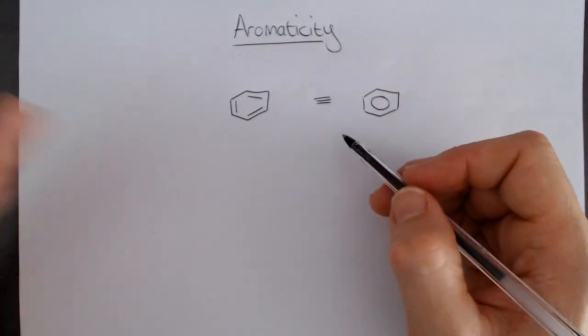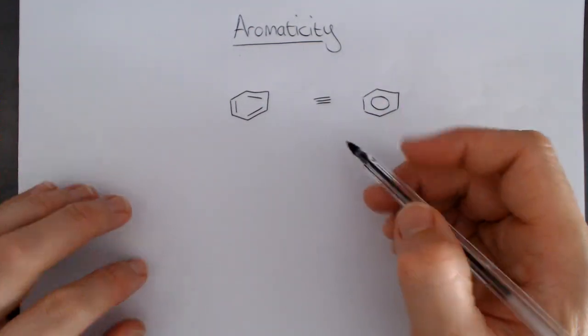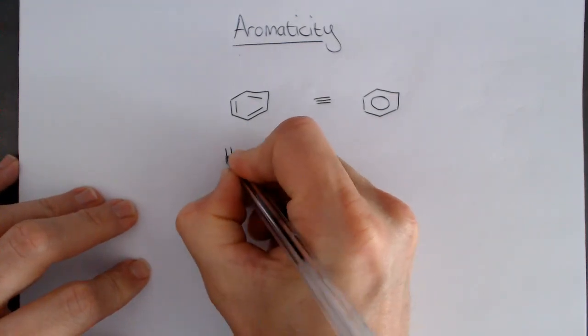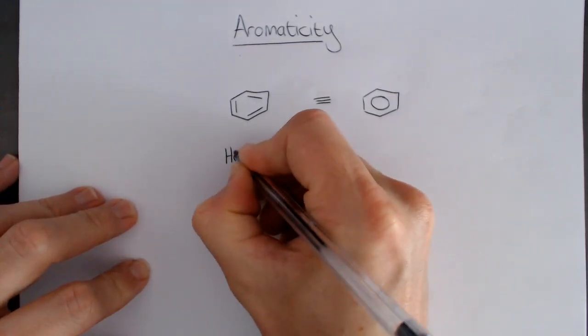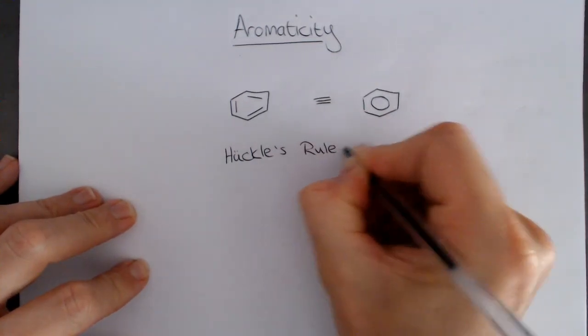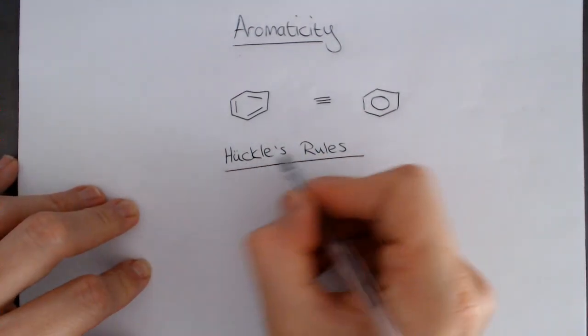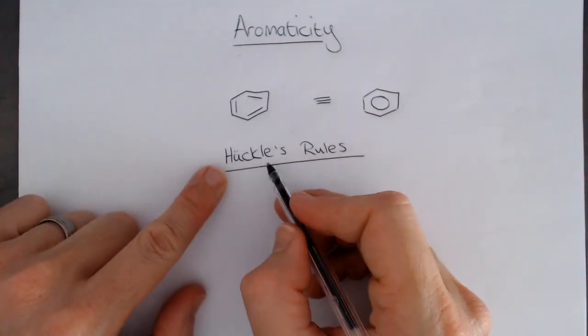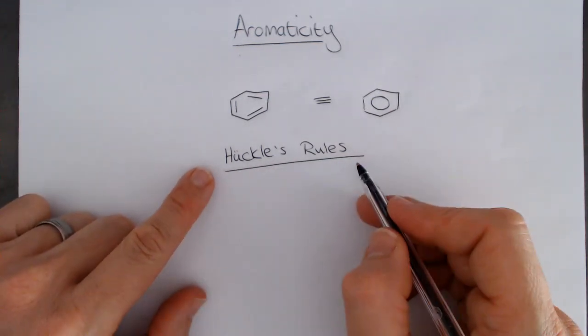Obviously, recognizing a structure like that is very easy. But the rules are named after the person who developed them. And the guy's name was Huckel, and these are referred to as Huckel's rules. I wouldn't expect you to know the name per se, but I do expect you to know the rules.